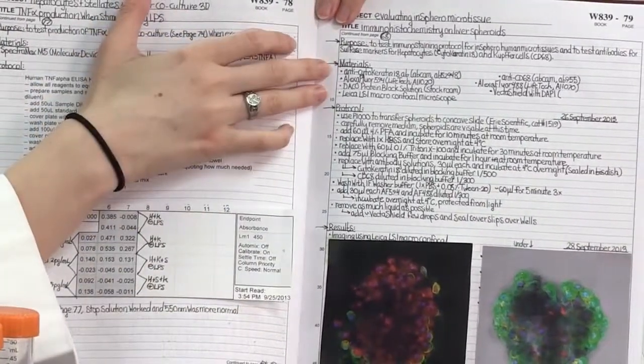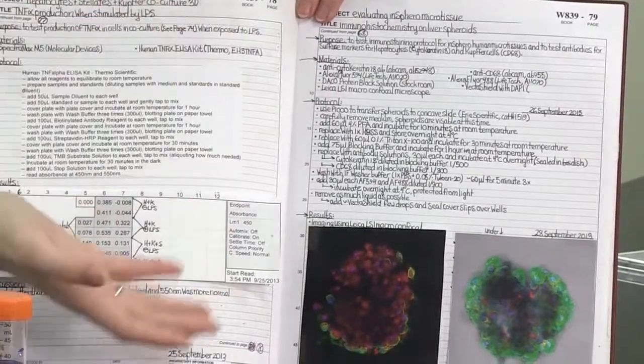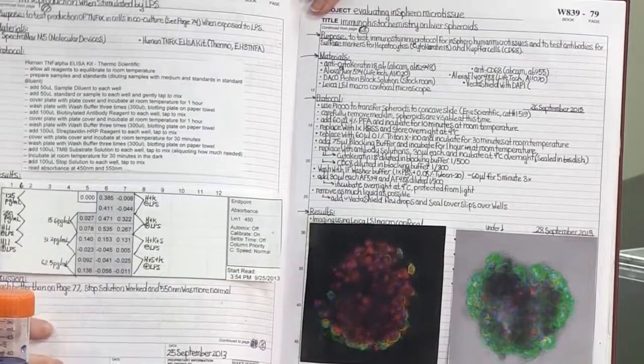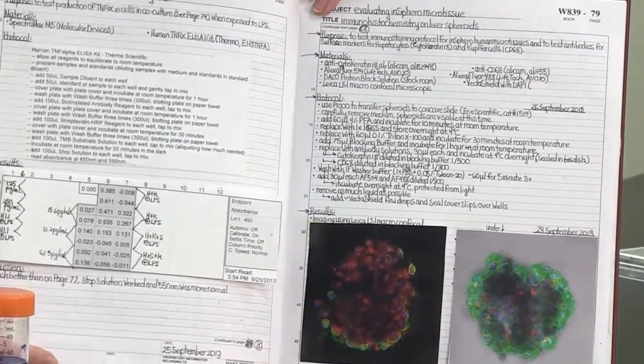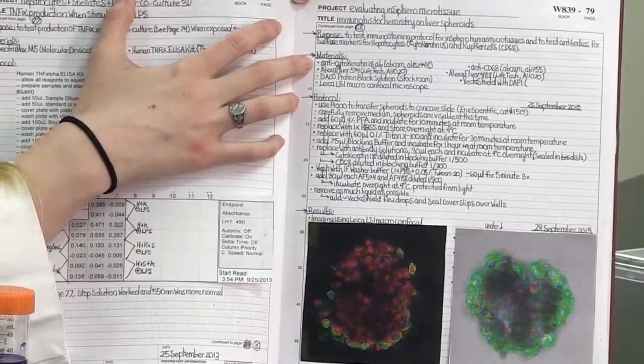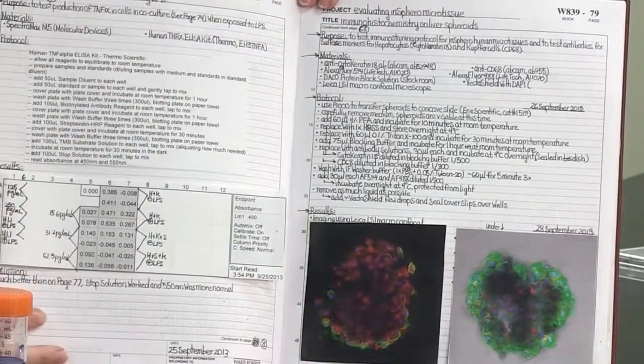It's also really important to note down which materials you use because oftentimes there are hundreds of different medias you can pick and choose from and hundreds of different antibodies and so forth. So it's really helpful to have the name of whatever you're using as well as catalog numbers and lot numbers.